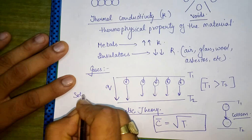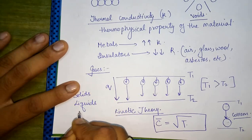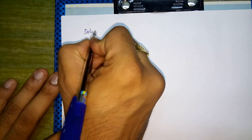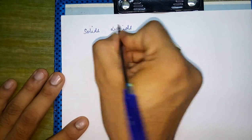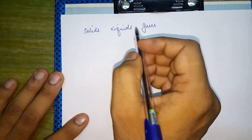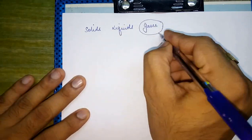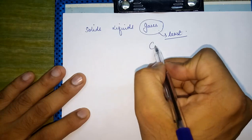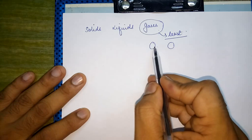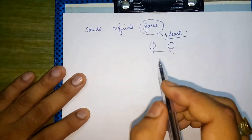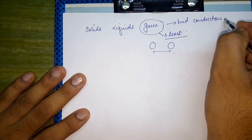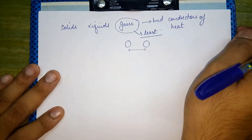Conduction is a type of heat transfer that takes place in solids, liquids, as well as gases — it occurs in all three states of matter. Comparing thermal conductivity of solids, liquids, and gases: thermal conductivity of gases is least among all three because the molecular separation in gases is very large, making it very difficult to transfer energy by lattice vibrations. So gases are generally bad conductors of heat.